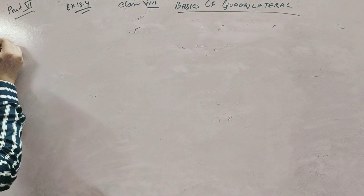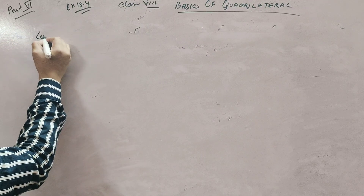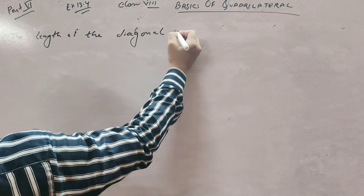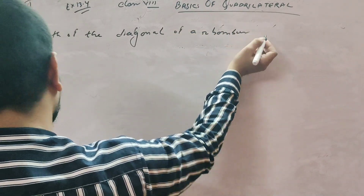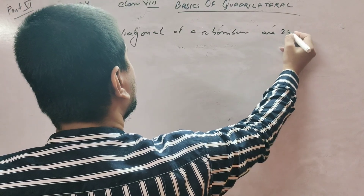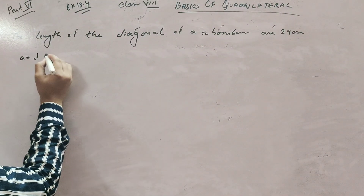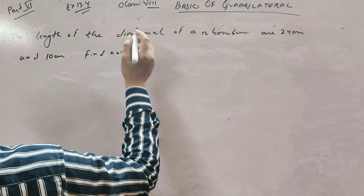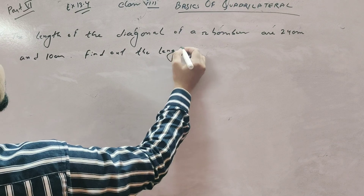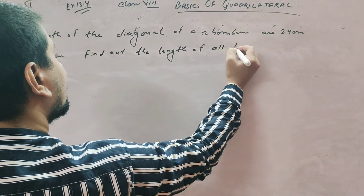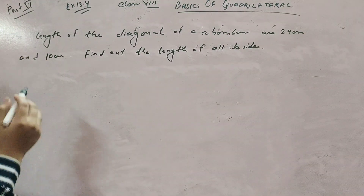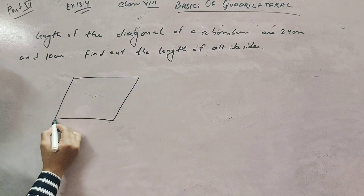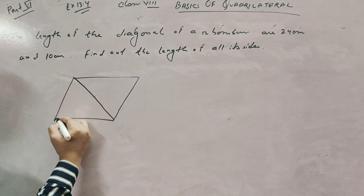Question number 3: The length of the diagonals of a rhombus are 24 centimeter and 10 centimeter. Find the length of all its sides. Suppose this is your rhombus ABCD. This diagonal is 24 and this one is 10 centimeter.